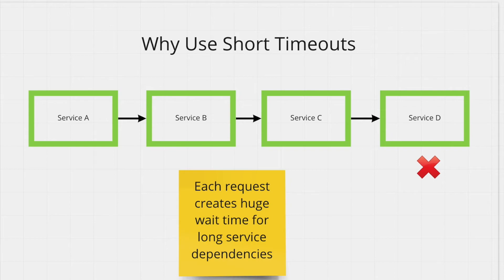Now let's see why we want to use short timeouts. The most important reason is that service dependency chains can be very long. In this example, you can see a chain of four services — a user performs an action, the front end hits service A, service A calls B, B calls C, and C calls D. Each of them will have potential timeouts. Let's say service D is the one that is failing. If your timeouts are not short, A has its own timeout of say 10 seconds, B has a further 10 seconds, C has 10 more — it piles up. All services in the chain will be overwhelmed by that one request if you use long timeouts. So you want to use shorter timeouts to avoid this snowballing effect.